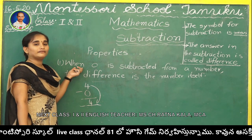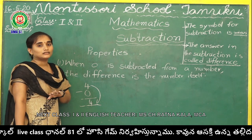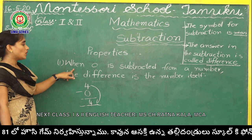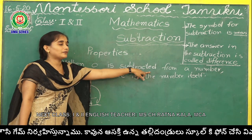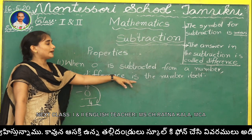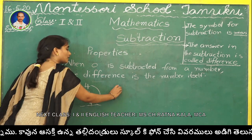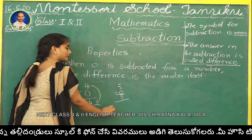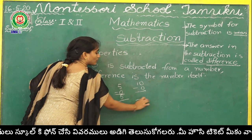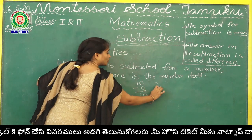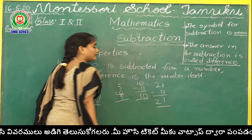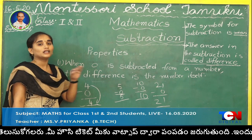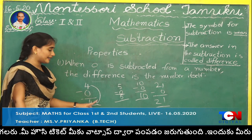In addition also, when we add 0 to any number, the answer is the number itself. In the same way in subtraction, when 0 is subtracted from a number, the difference is the number itself. 5 minus 0? 5. 10 minus 0? 10. 21 minus 0? 21. When we subtract 0 from any number, the answer won't change — the same number will come.